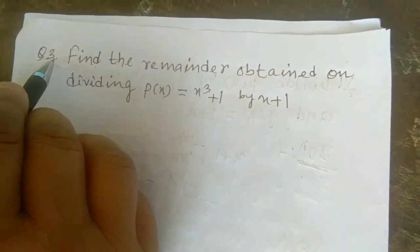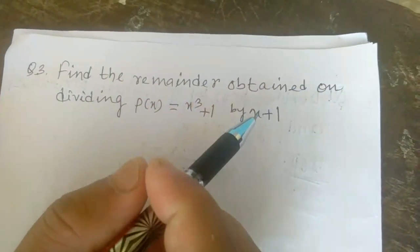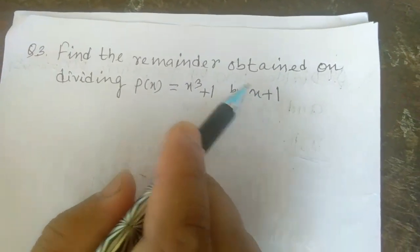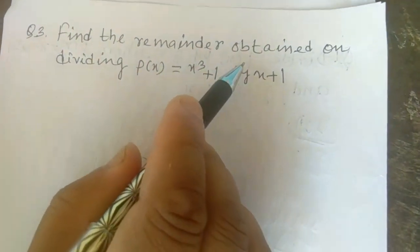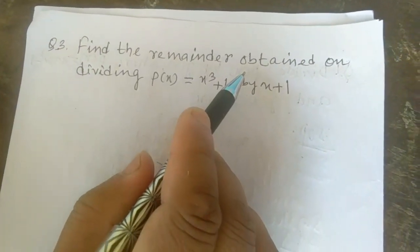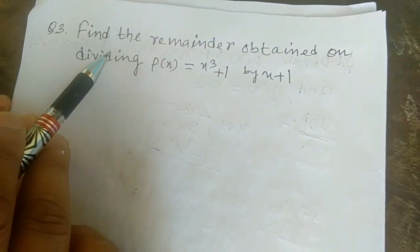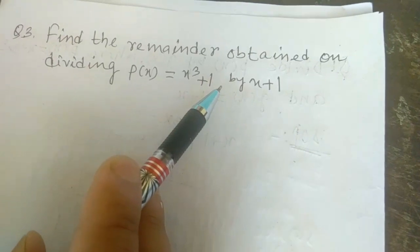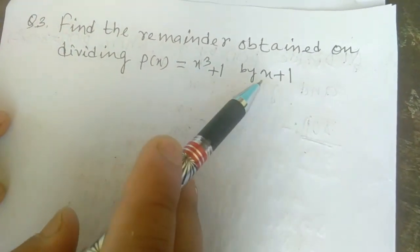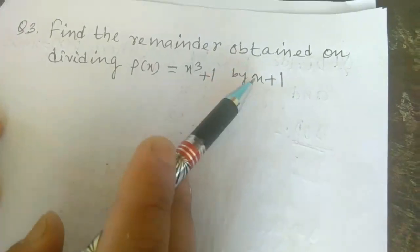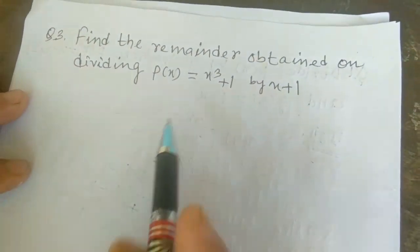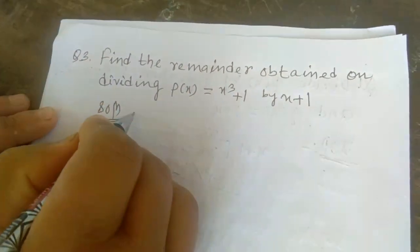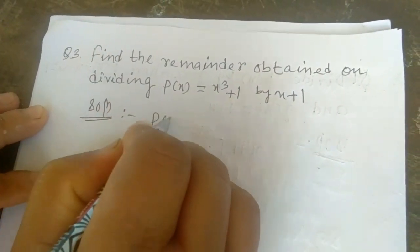Next question: find the remainder obtained on dividing p(x) = x³ + 1 by x + 1. Whenever it says 'find the remainder,' it is not compulsory that you divide by the long division method. We can apply the remainder theorem here. It is not necessary to divide p(x) by x + 1 using long division. So solution: whenever it says find the remainder, you can apply the remainder theorem.